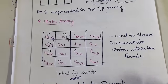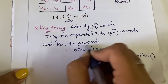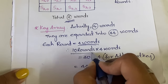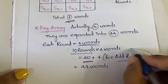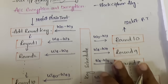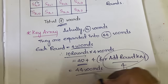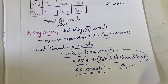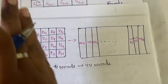Now let's look at the key array. In the AES algorithm, we have four words in the original key. Those four words are expanded into 44 words. Why? Because each round takes four words as input, and we have 10 rounds, so 10 into 4 equals 40. There is also an additional step called add round key, which requires four more words — so 40 plus 4 gives a total of 44 words. The four original words are expanded into 44.